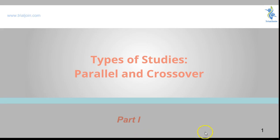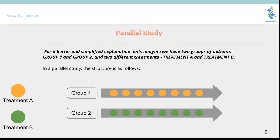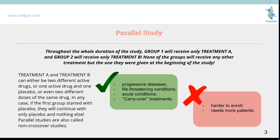The first one we're going to cover is the parallel study. For a simplified explanation, just imagine there are two groups being studied in parallel. One group is given treatment A — let's call this group one — and then group two is given another treatment altogether, which is considered treatment B. In a parallel study, both groups can be given an active drug, or one can be given an active drug and another can be given a placebo.